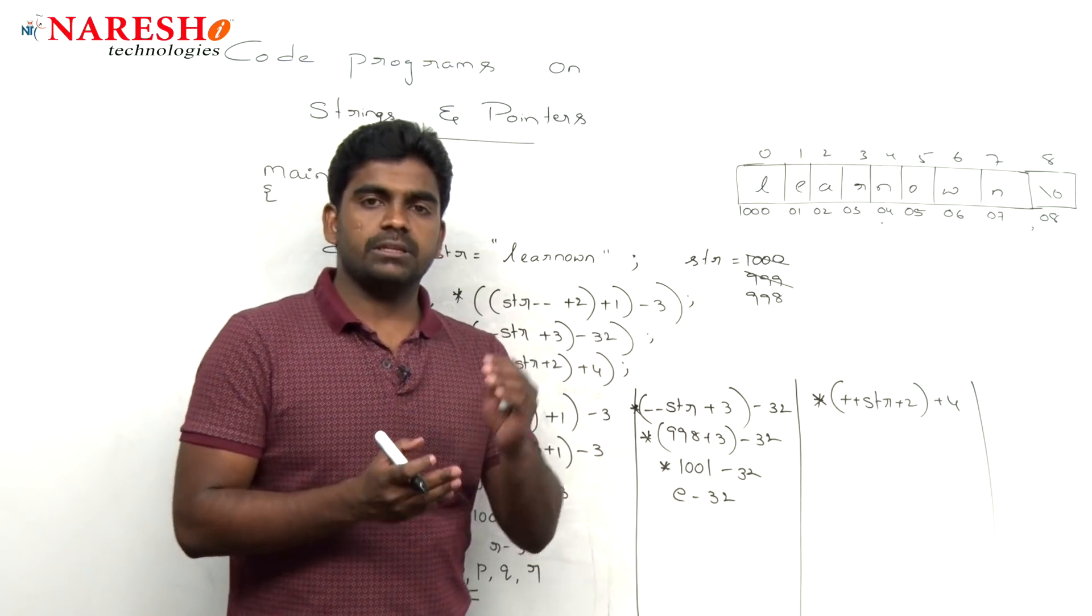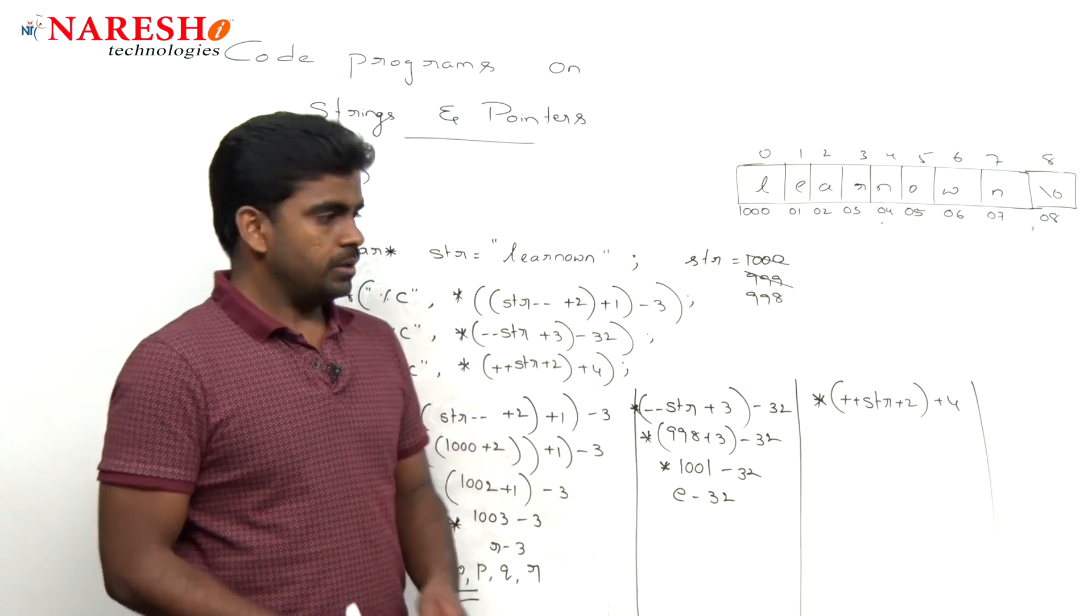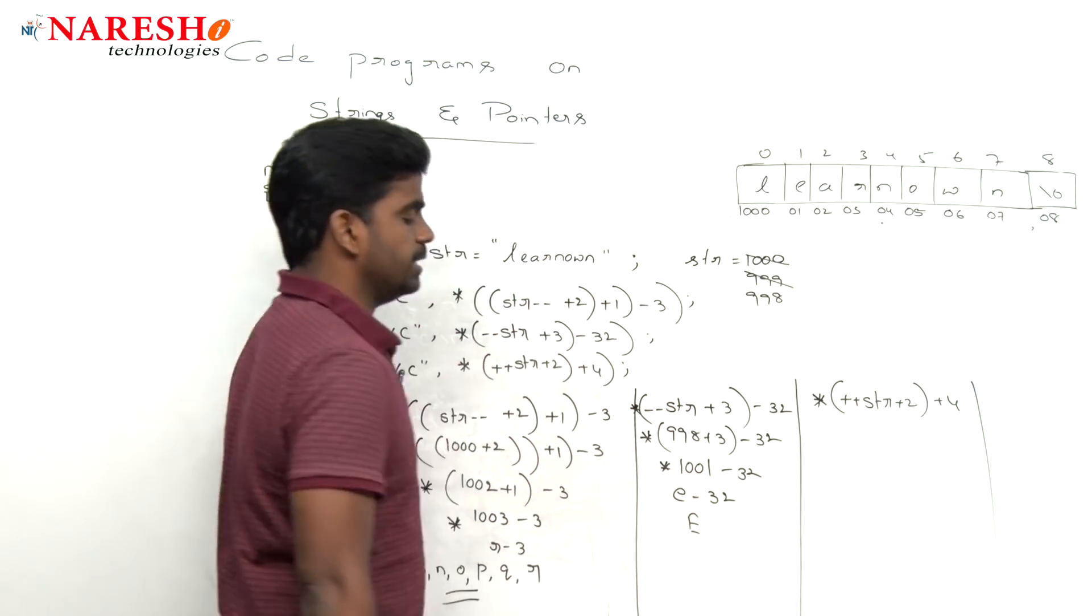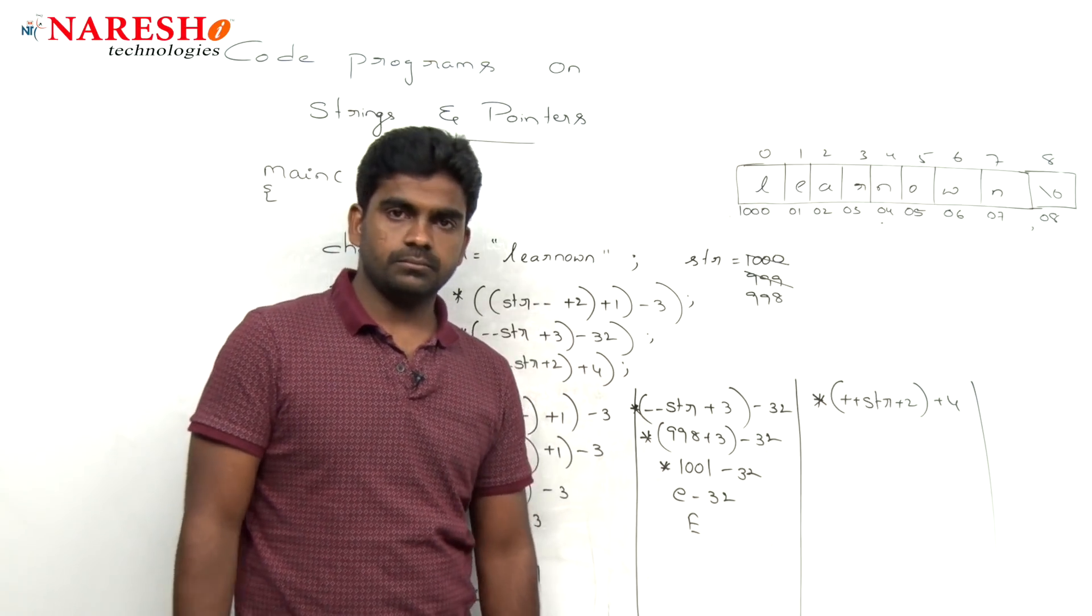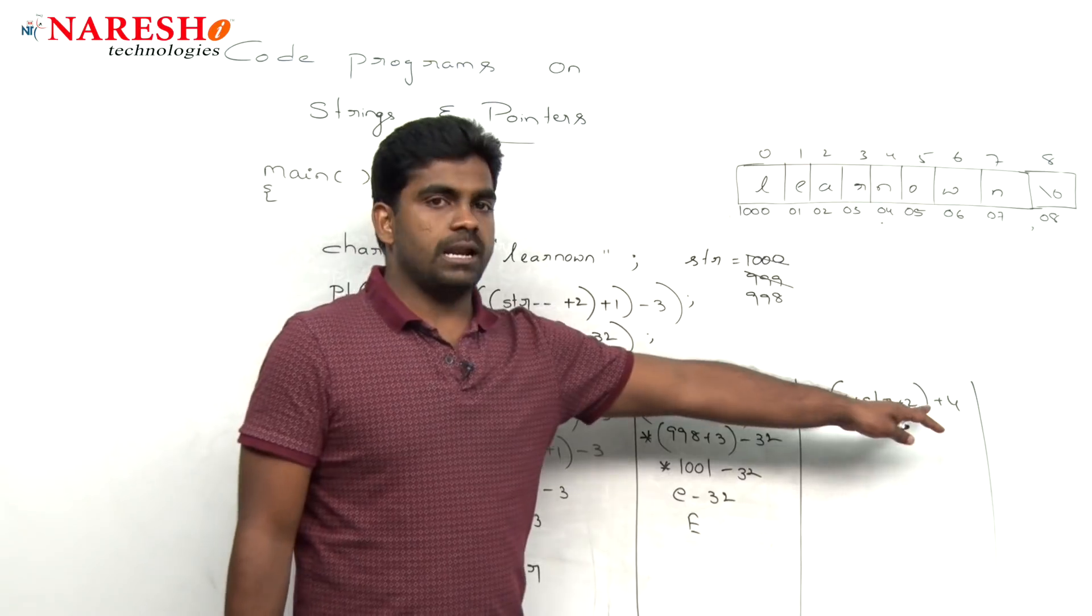So what is that pointer to 1001? It is a small e, small e minus 32. The ASCII difference between small letters and capital letters is what? 32. So small letter minus 32 means what? It will give that capital letter E.